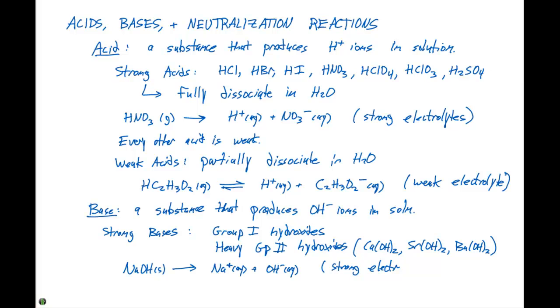Weak bases will have partial dissociation. And an example of a weak base is ammonia. If we have ammonia, which is NH3, and we go to dissolve this in water, an equilibrium is going to form between NH4 plus in aqueous solution plus OH minus in aqueous solution. And just like weak acids, weak bases are weak electrolytes.